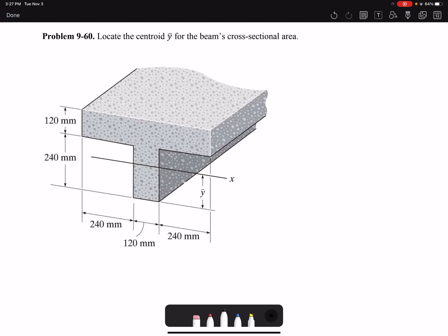Hello everyone, in this video I'm going to solve Problem 9-60 of Chapter 9: locate the centroid Y bar for the beam's cross-sectional area. Y bar is measured from the bottom of the cross section, so I will call this my X coordinate and that would be my Y coordinate.